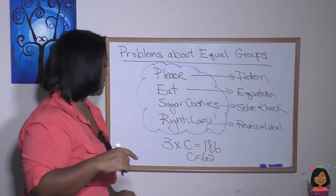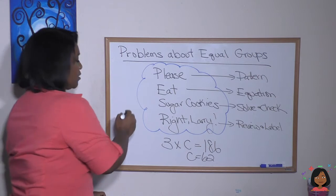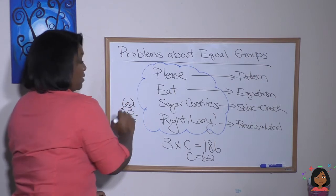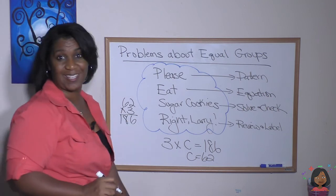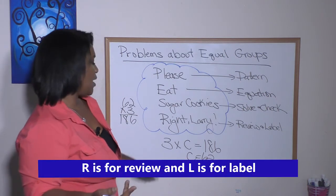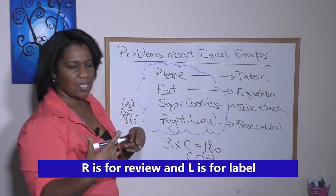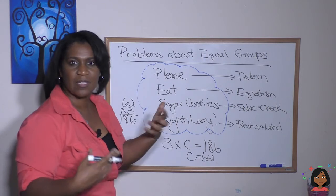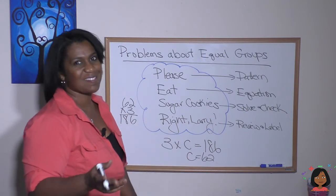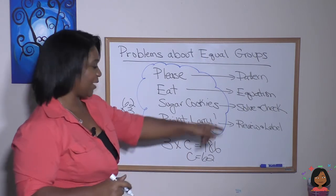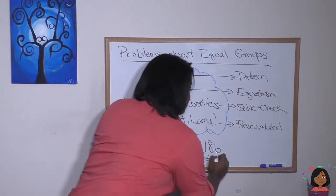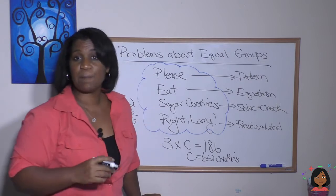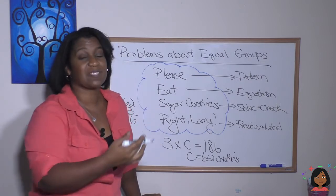Let's check it first: 62 times three gives us 186 cookies — it's looking good. Let's review: he had three packs of Oreos, and in each pack there were 62 cookies. Would that lead to there being 186 total? That sounds about right. Wonderful. And we're going to label it 62 cookies. There's one example using equal groups and the multiplication pattern.